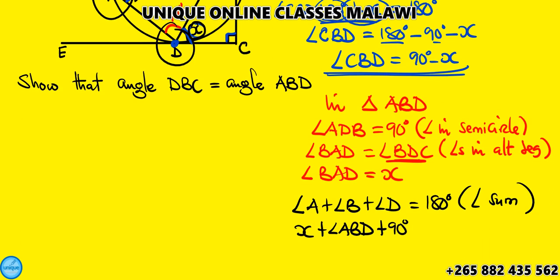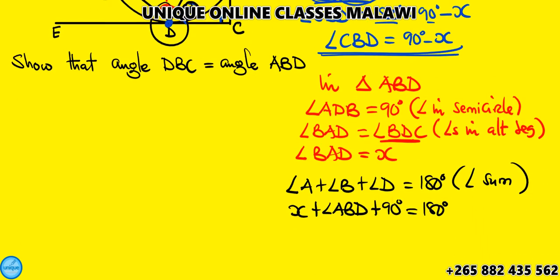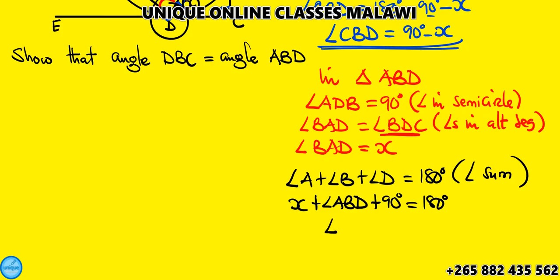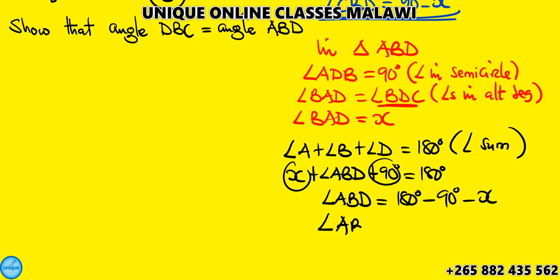We should make angle ABD the subject of the formula. So angle ABD is equal to 180 degrees minus 90 degrees minus x. The value of angle ABD is 90 degrees minus x.